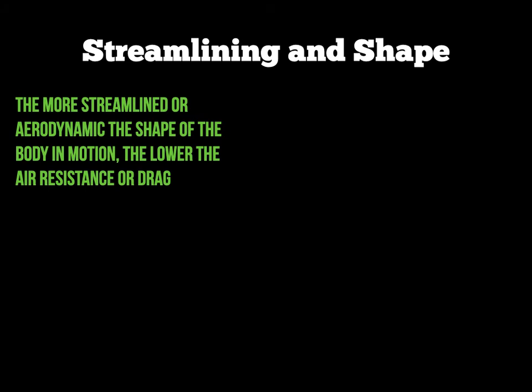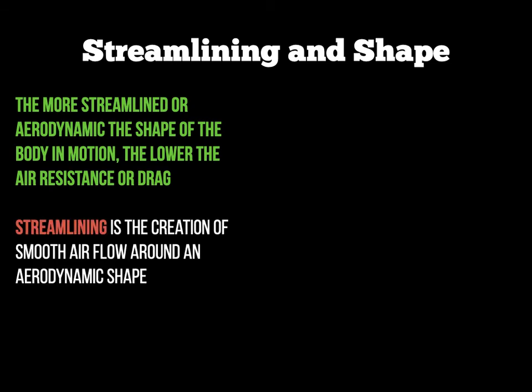Streamlining and shape are technically part of the same factor, but can be used differently in exam questions. Making an object, a body, or a person more streamlined — or aerodynamic — lowers the air resistance or drag through water. Streamlining means creating a smooth airflow around an aerodynamic shape. For example, after a diver enters the water, they stretch into a tall, streamlined position to minimise water pressure and move faster. Similarly, cyclists lower their body position to streamline, and 100-metre sprinters go low at the start to minimise air resistance and accelerate.